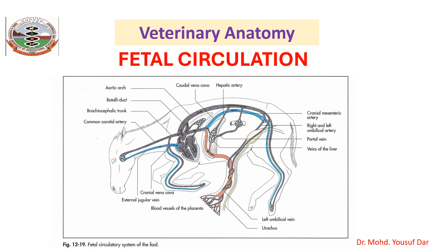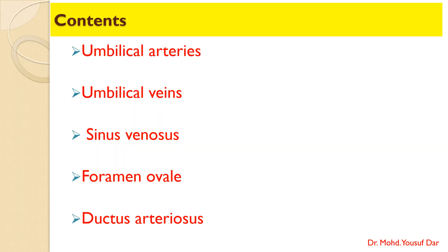Today's topic is fetal circulation. Before going into details about fetal circulation, there are some important terms that we must understand: firstly, the umbilical artery, umbilical vein, sinus venosus, foramen ovale, and ductus arteriosus — these are important terms before we start discussing the whole fetal circulation.